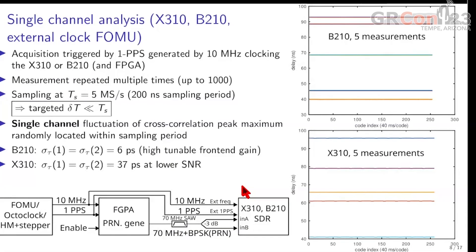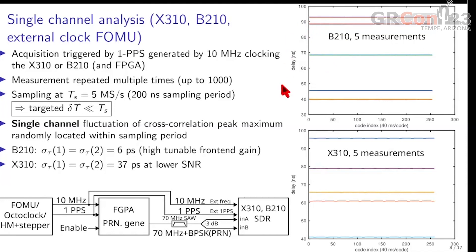The measurement we're doing is sampling at 5 MHz per second — a 200 nanosecond sampling period — many times on both channels, and we fit the correlation peak to track how the time delay fluctuates. With a single-channel measurement repeated multiple times, within each measurement the fluctuation is very small, in the few picosecond range. But from one measurement to the next, the time delay fluctuates randomly within the sampling period. The sampling period is 200 nanoseconds, so we observe a random fluctuation of a few tens of nanoseconds from one run to another.